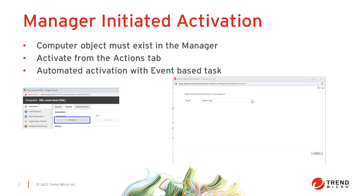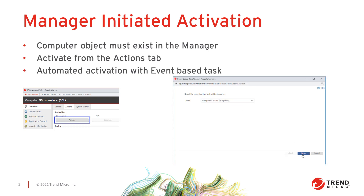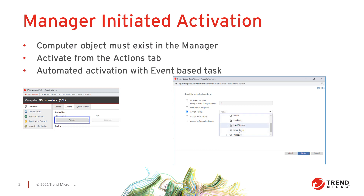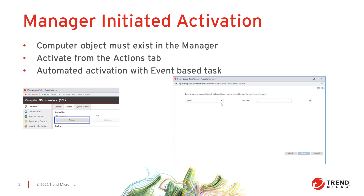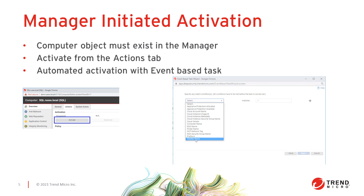In addition to performing this action manually, an event-based task can be created to perform the activation on a computer depending on the event that takes place, such as being created within an existing connector like a new EC2 instance or VM in VMware. When the manager sees a new computer object created under a connector, we can initiate the activation command, applying a policy and relay group at the time of activation. There are other event-based options that you can take advantage of as well, depending on your agent activation requirements.